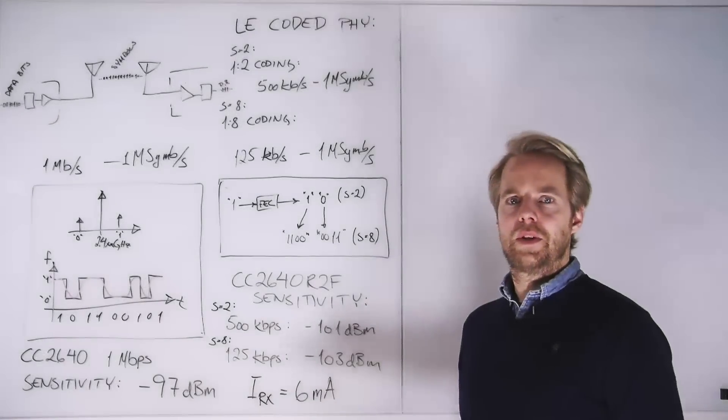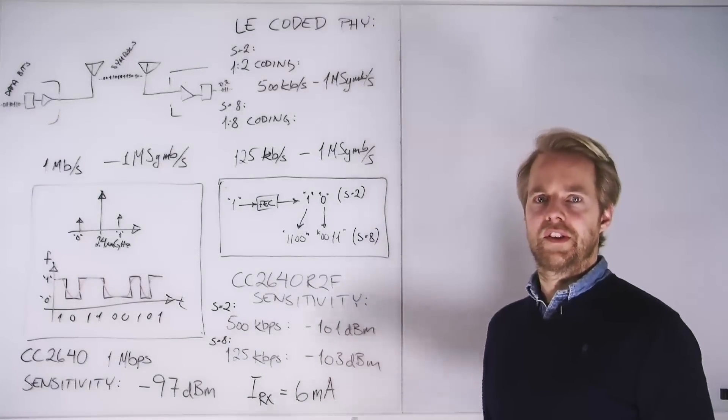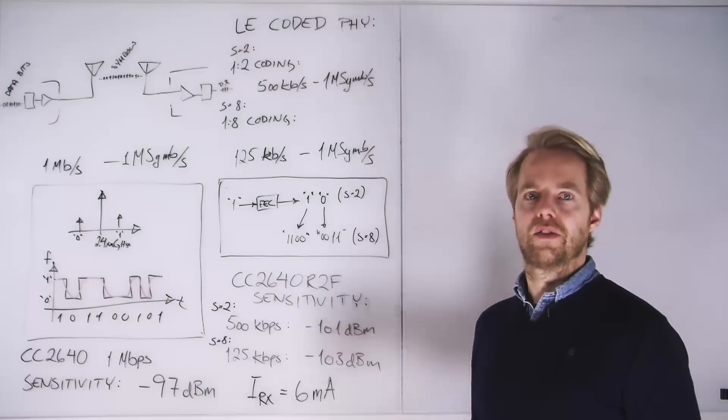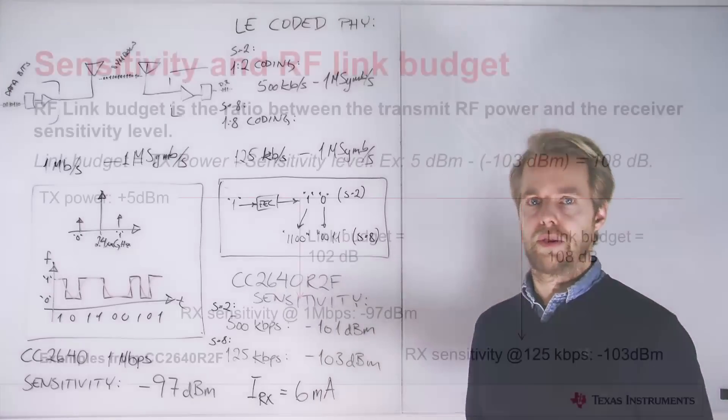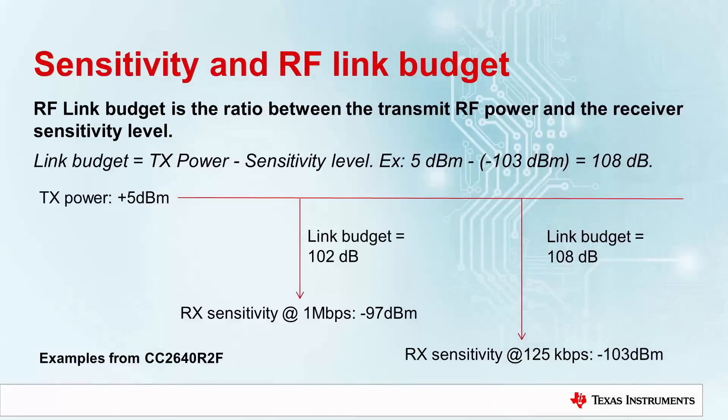For the CC2640 R2F, the sensitivity when running eight symbol coding is minus 103 dBm. Comparing that to the already best in class sensitivity for one megabit per second BLE at minus 97 dBm means that you get a 6 dB improvement in link budget. A very important factor here is that the receiver current consumption is the same as before, and for the CC2640 that is 6 milliamps.